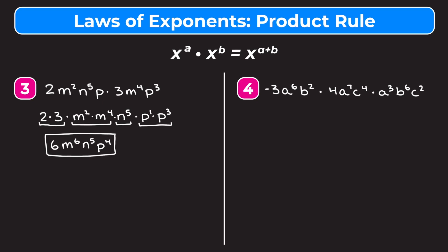Moving on to example four, we have a longer expression. I'm going to rearrange: negative 3 times negative 4 in the front, then a to the sixth times a to the seventh times a to the third, then b squared times b to the sixth, then c to the fourth times c squared. Negative 3 times negative 4 is 12. For the a's, we add all three exponents: 6 plus 7 plus 3 gives us 16, so we get a to the sixteenth.